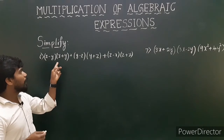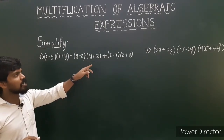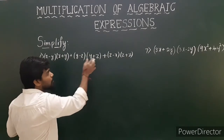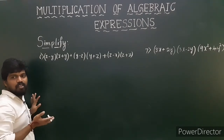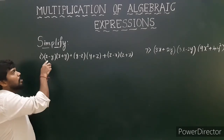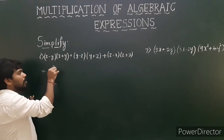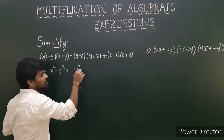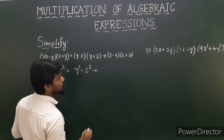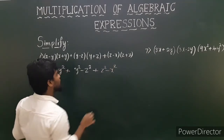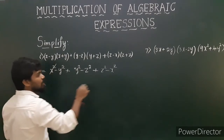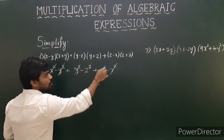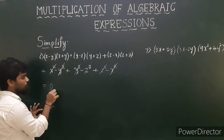Now the sixth problem: x minus y into x plus y, times y minus z into y plus z, times z minus x into z plus x. Each pair is in the form a minus b into a plus b, so write each as a square minus b square. You get x square minus y square, times y square minus z square, times z square minus x square. Now x square cancels with minus x square, minus y square cancels with plus y square, and minus z square cancels with plus z square. The final answer is 0.